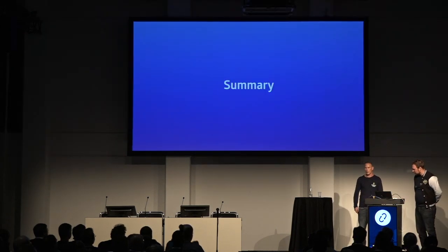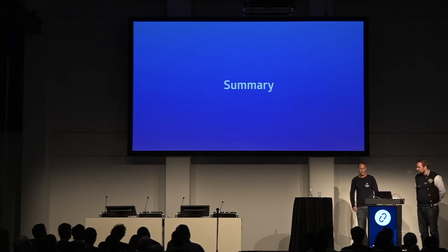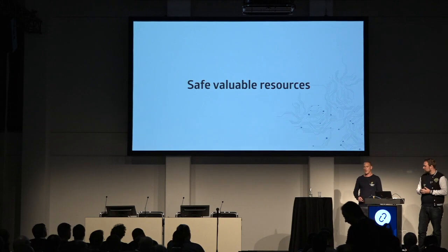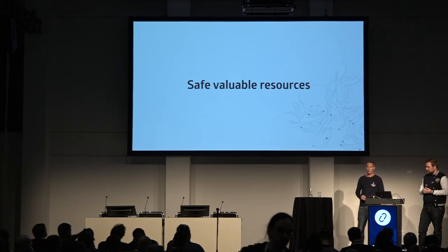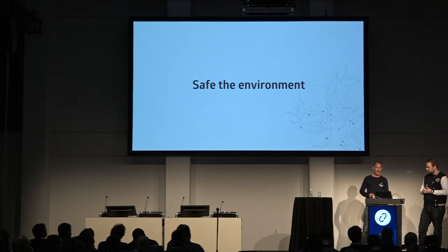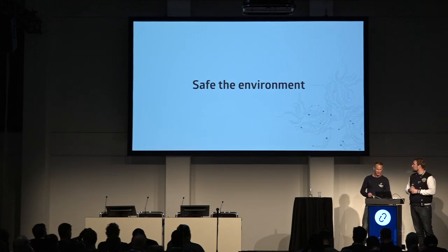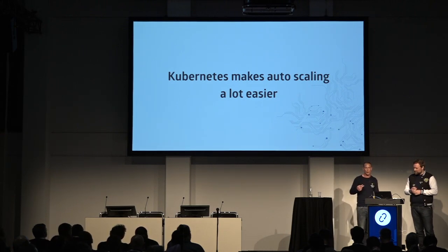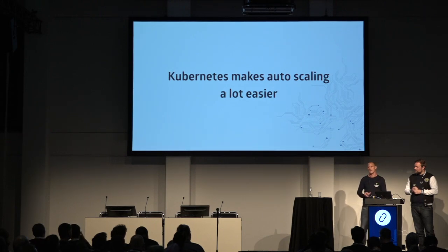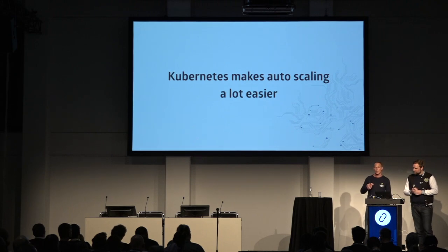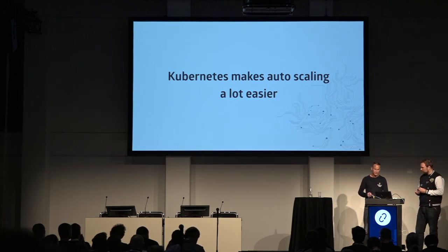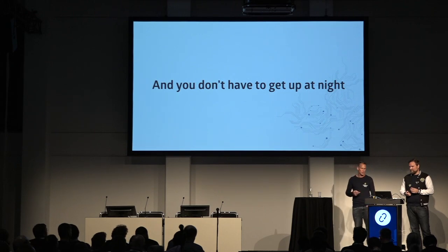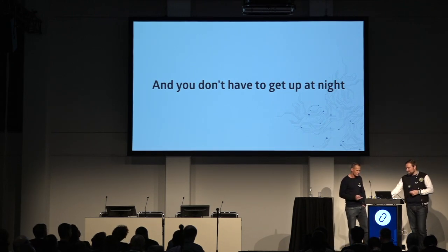To wrap up: with autoscaling you can save valuable resources and maybe even help save the environment. Kubernetes makes autoscaling a lot easier because it has everything you need on board — we saw the horizontal pod autoscaler, vertical scaling, and node autoscaling which can easily be integrated into a new cluster. And one of the best things is you may save yourself from getting up at night because one of your applications is not working as it should be. Thank you very much.